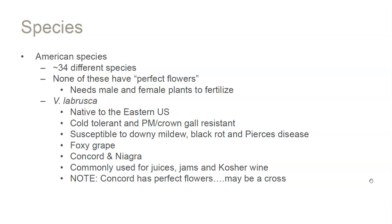Vitis Labrusca is native to the Eastern United States. Concord is often thought of as a Labrusca grape, but it's actually Labruscana because it does have a perfect flower and fertilizes itself. These are very cold tolerant, disease-tolerant varieties. Labruscana grapes have those foxy, grapey aromas — think Welch's grape juice, or kosher wines like Manischewitz or Mogan David, which are made from Concord.